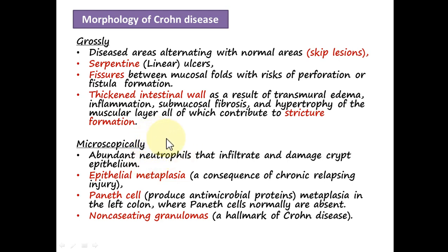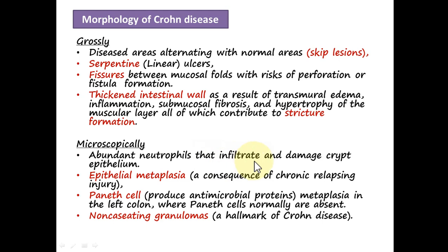In both inflammatory bowel diseases, there are remissions and relapses. During a relapse, the patient may develop serious symptoms and signs, while during remission the inflammation subsides and patients get relief. During active inflammation, there is infiltration of abundant neutrophils. In chronic conditions, there may be infiltration of lymphocytes, plasma cells, and involvement of the mononuclear macrophage system.